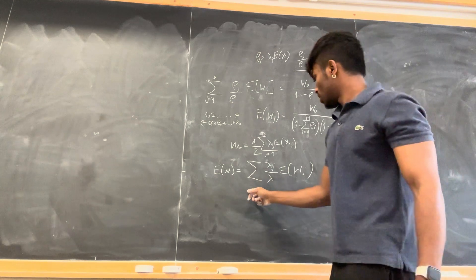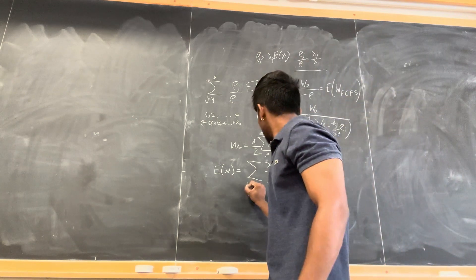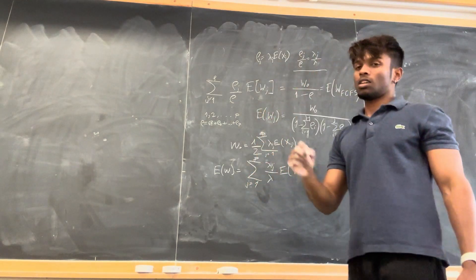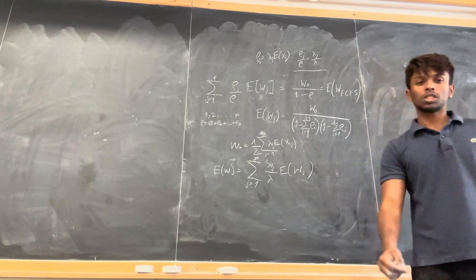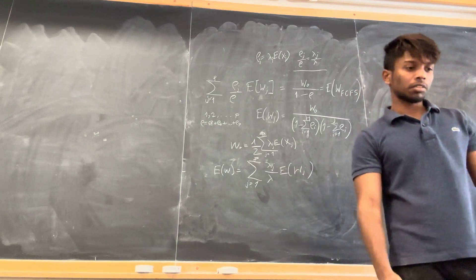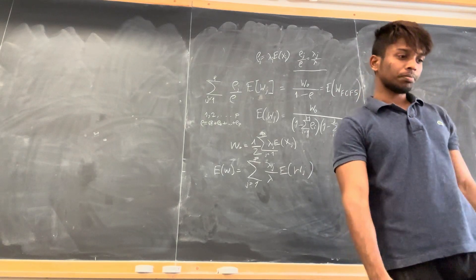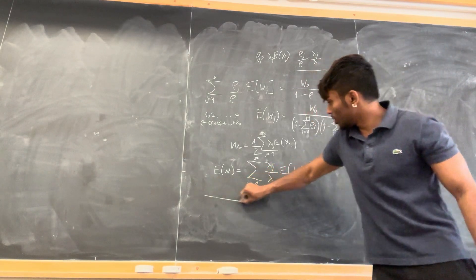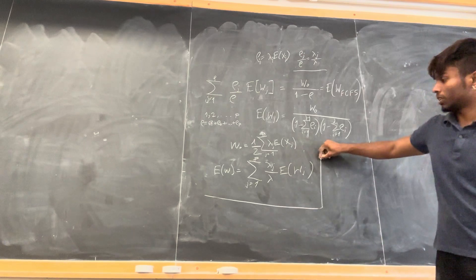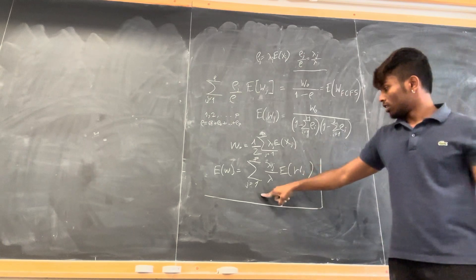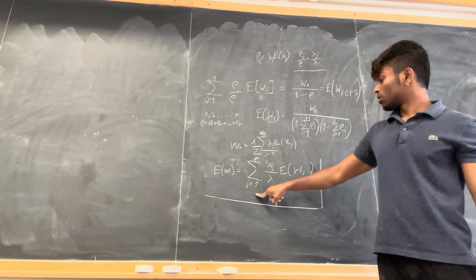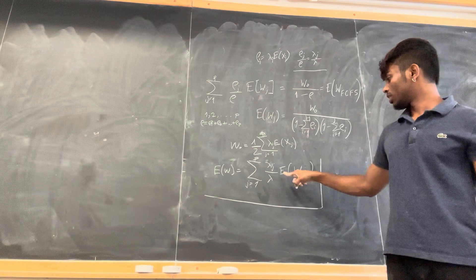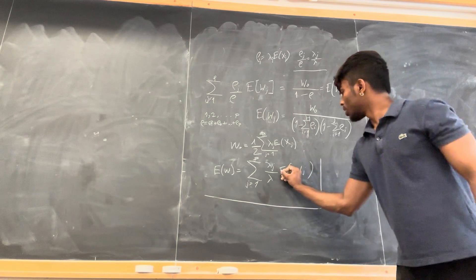The summation runs j = 1 to p for p classes of customers arriving at the server. So the mean waiting time E[w] is equal to the summation of (λ_j/λ)·E[wj] for j = 1 to p.